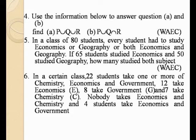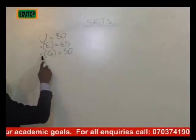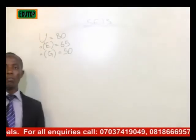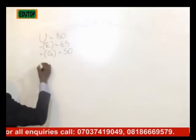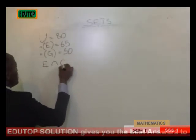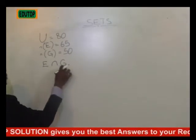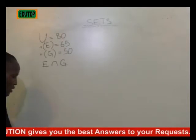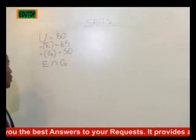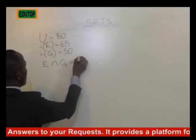Our universal set is the total number of students in the class. The number of students offering economics is 65, and the number offering geography is 50. We are looking for E∩G — the number of students that study both. Whenever we hear 'both,' that means intersection; if it is 'or,' then we are talking about union.